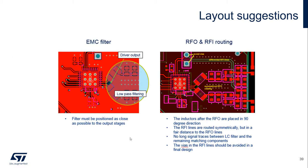Here are some examples of layout suggestions. On the left, you can see the EMC filter placed right at the RFO pins — making sure the EMC filter is very close. Looking to the right, you'll notice that the EMC inductors are placed at 90-degree angles to each other. The reason is that in the past, wire-wound inductors were used, and in order to keep them from acting like a transformer, we separate them — the easiest way is to put them at 90 degrees. In addition, the RFI lines are routed symmetrically, though the distance isn't exactly the same because they run on opposite sides of the chip. Make sure there are no long signal traces between the LC filter and the remaining matching components, keeping the output circuit signal path very short. Also, keep vias away from the RFI lines — they should be avoided in the final design if possible.